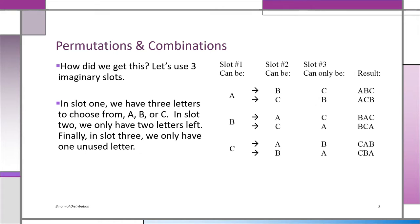Suppose you started with B in slot one. In slot two, you can put an A or a C. If you started with A in slot two: B, A — all that's left is C, giving you B, A, C. If in slot two you put C after B, you must have A left: B, C, A. This is called a tree diagram, if you do it.